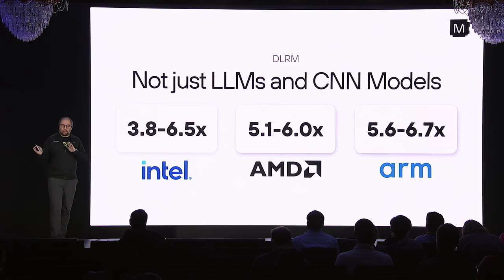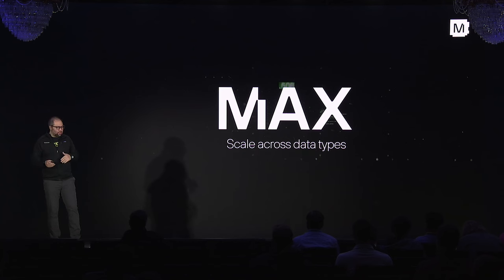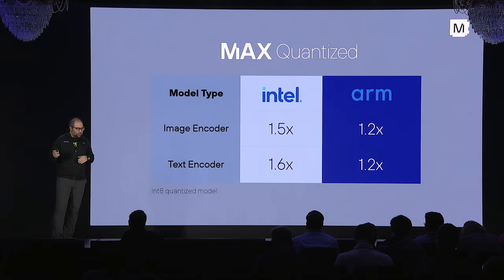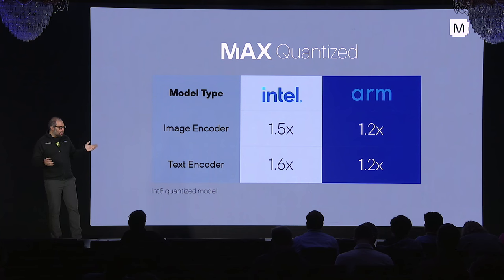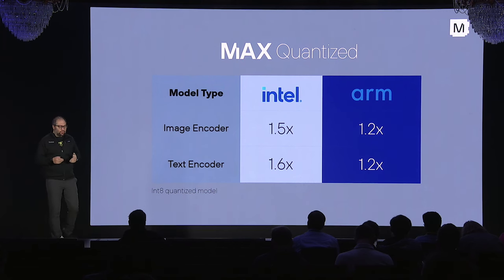That's varying model size and hardware. What if we vary the data type? We see a proliferation of things like int8, int4, FP8, and so on. For a quantized int8 model, if we take the Llama 2 model, we're 20 to 60 percent faster over ONNX runtime.